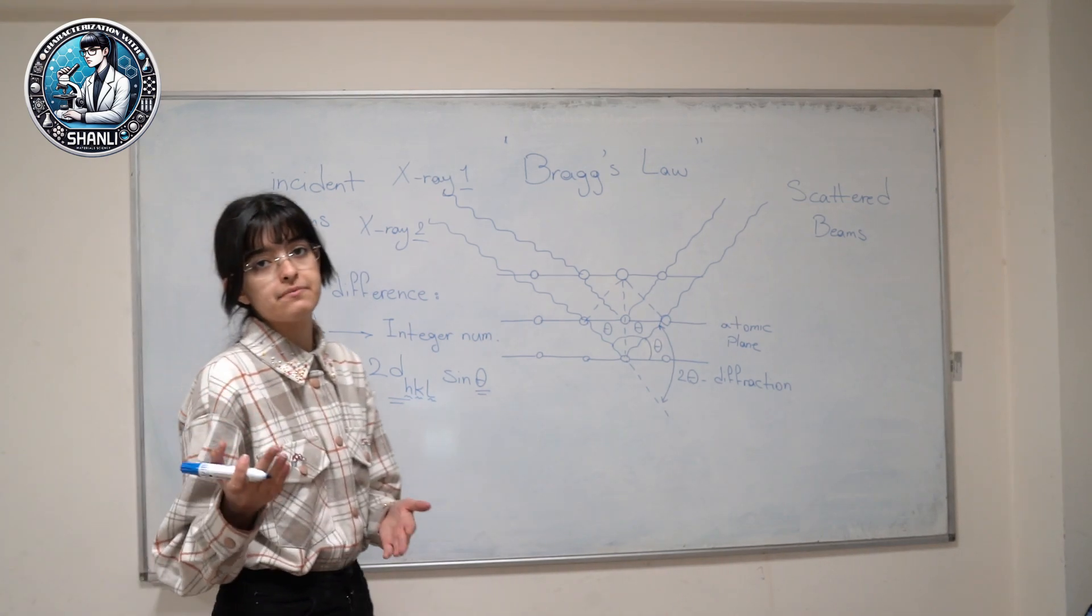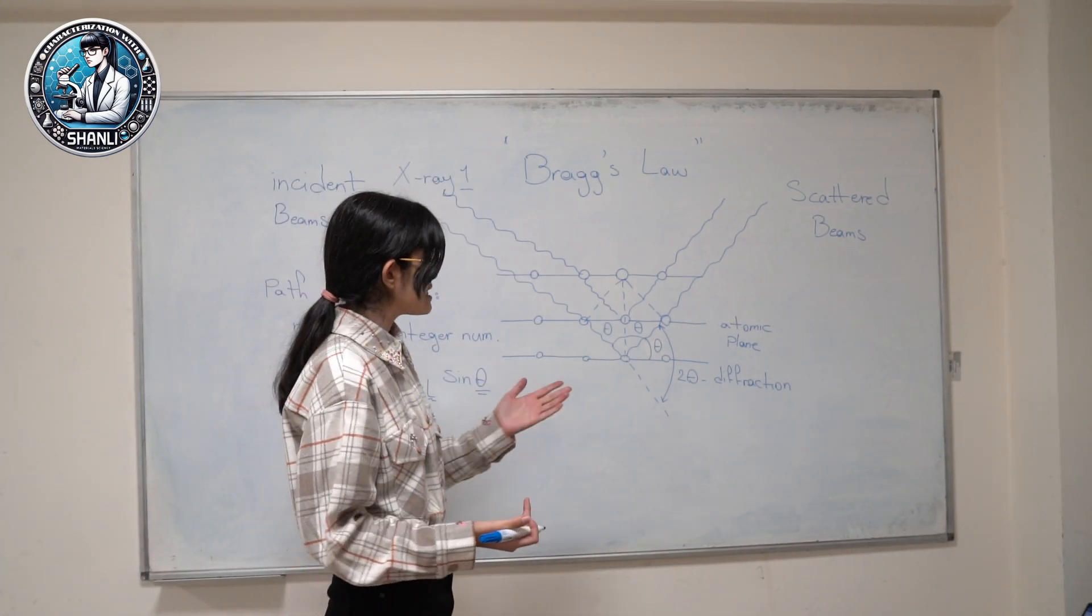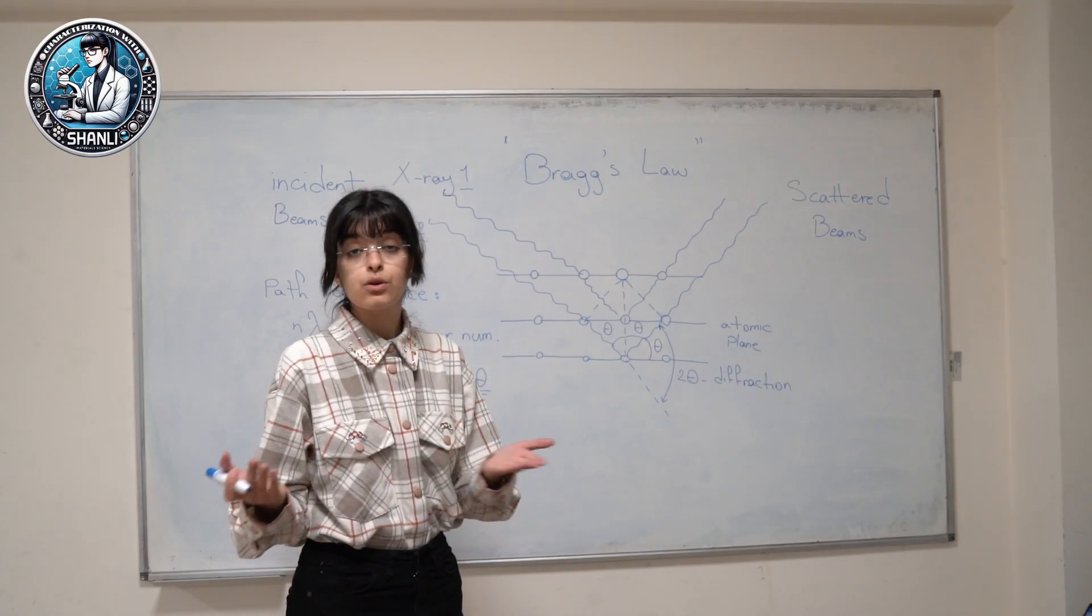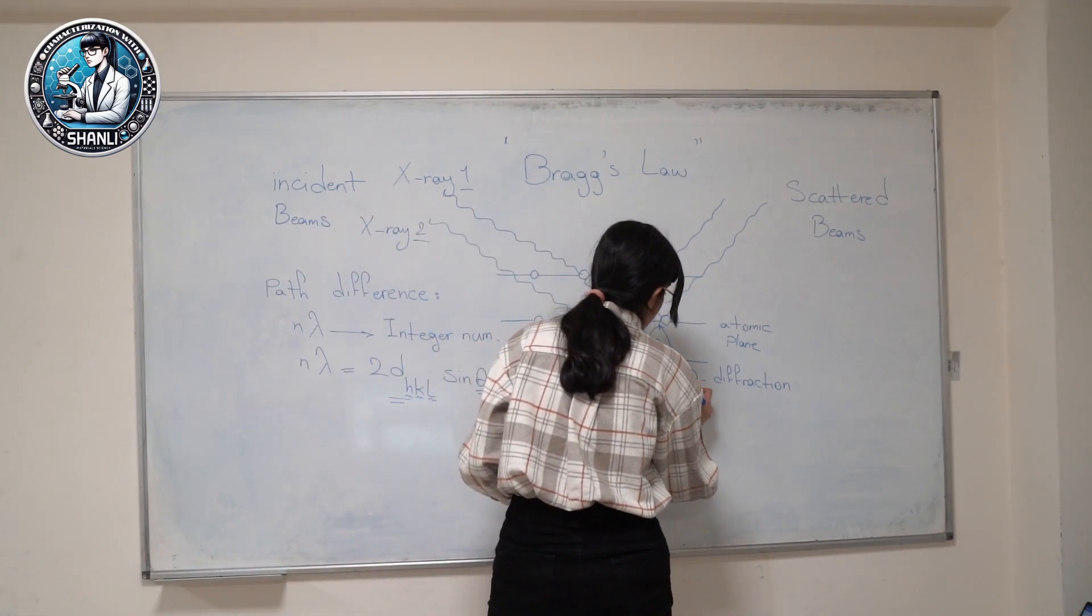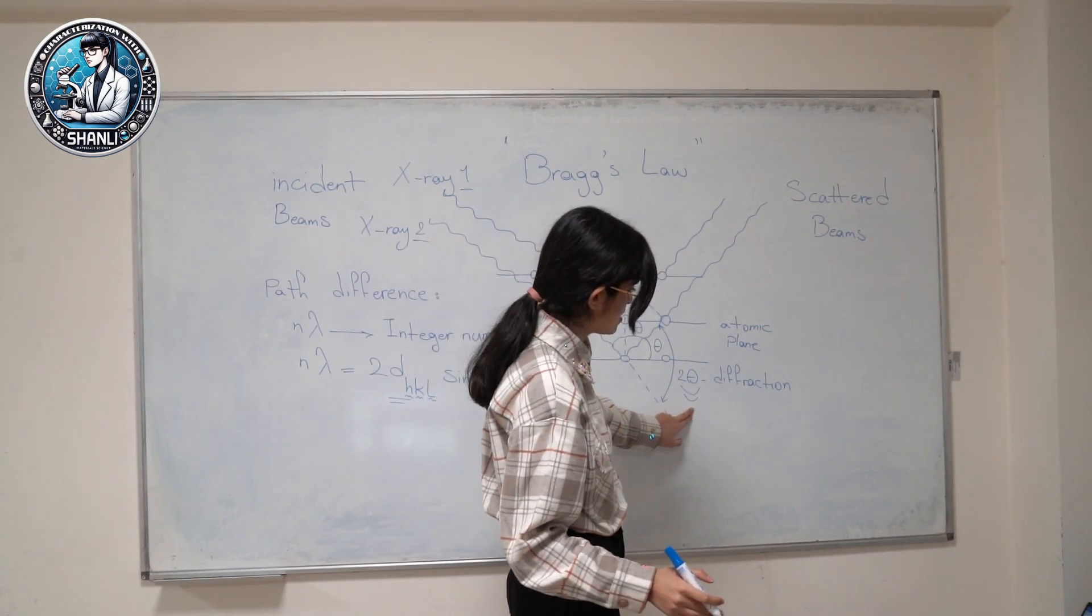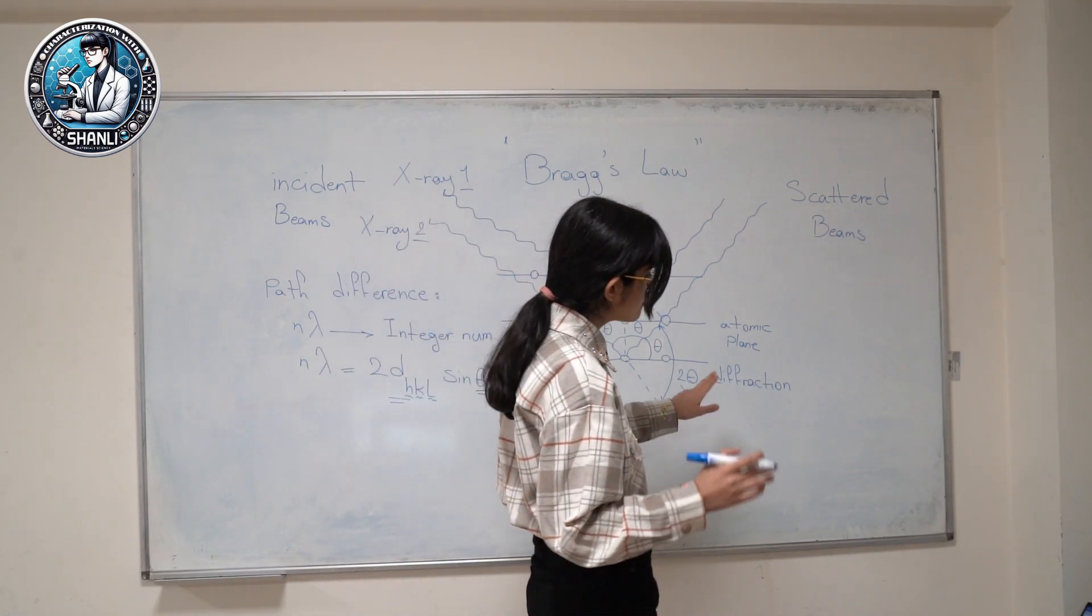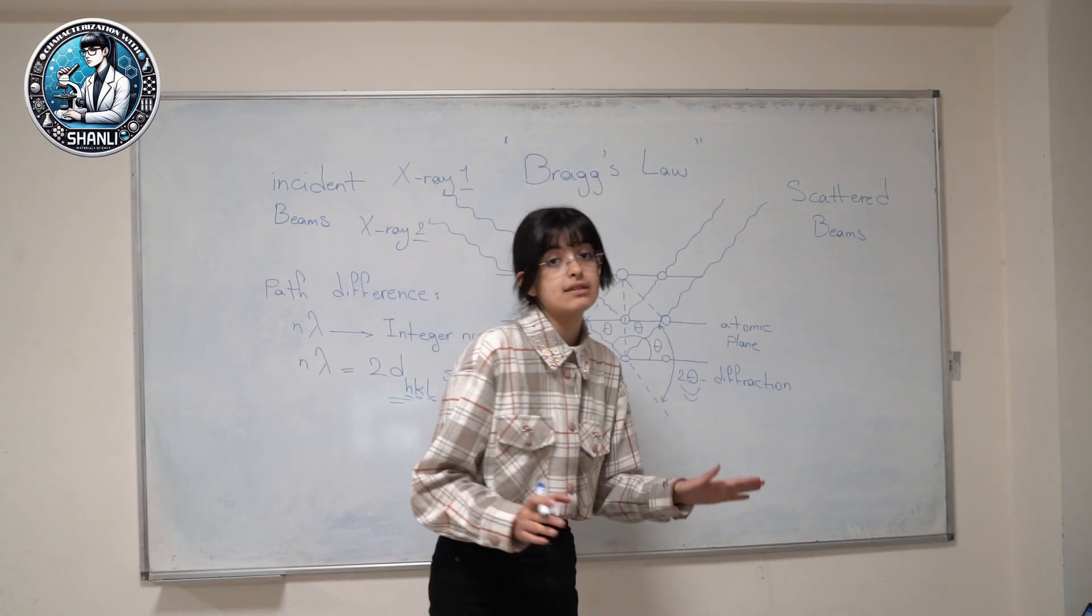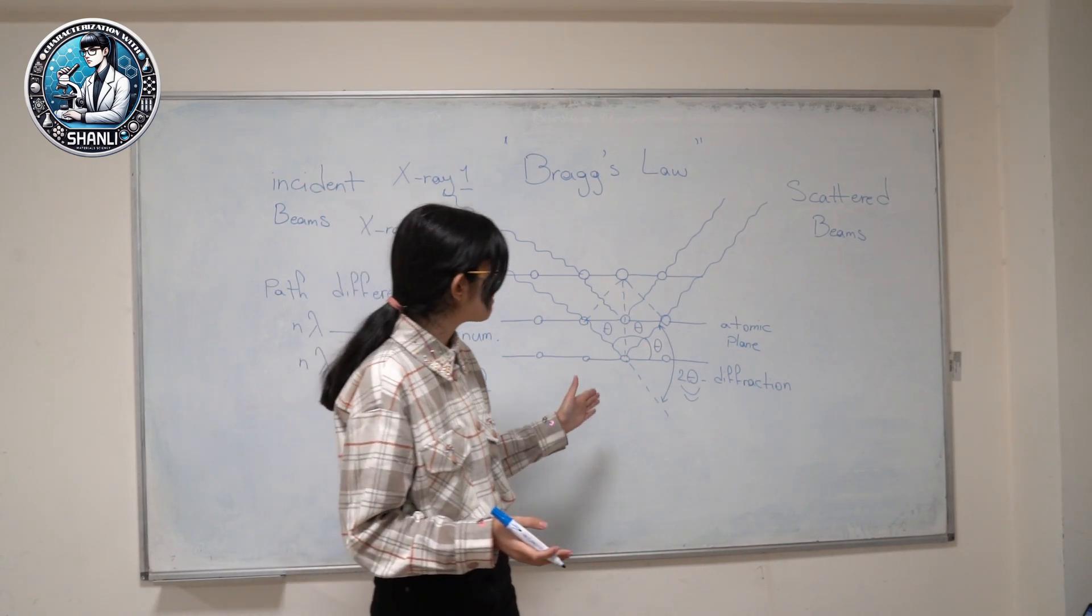So this may be a question also for you: Why do we have two theta instead of theta? In X-ray diffraction experiments, the angle between the transmitted and the diffracted beams is always two theta, because of the geometric shape of Bragg's law.